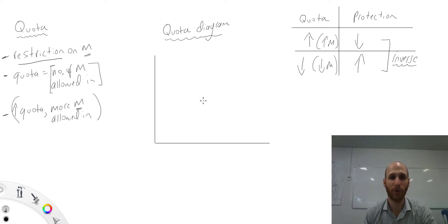If I look at the quota diagram, we've got the similar setup: P, Q, O. If the government controls the number of imports coming in, then the number is actually fixed. It doesn't vary.